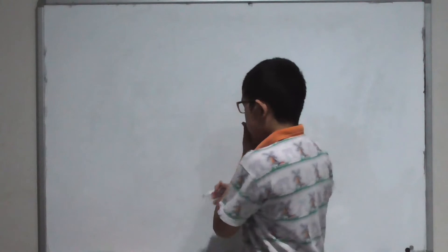Hi everyone, welcome back to my YouTube channel. In this video I'll be discussing the last and foremost trig identity, which is the Pythagorean identity. To come up with the equation, let's start with a unit circle.